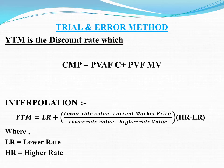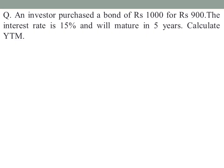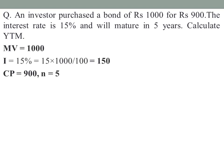Let's look into an example. An investor purchased a bond of Rs.1000 for Rs.900. The interest rate is 15% and it will mature in 5 years. Calculate the YTM. So the maturity value is Rs.1000, the interest rate is 15%, interest amount is Rs.150, current price is Rs.900, and the period of maturity is 5 years.